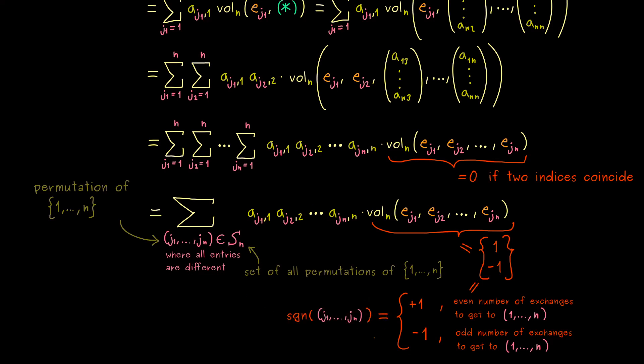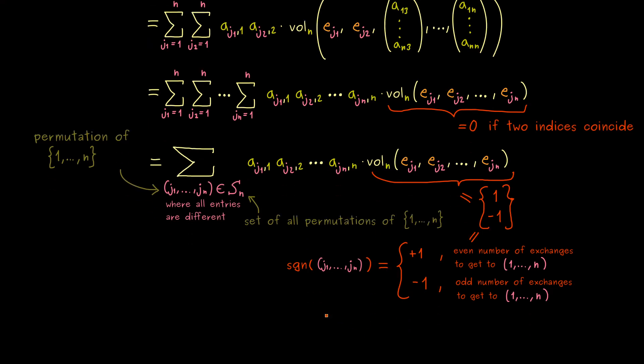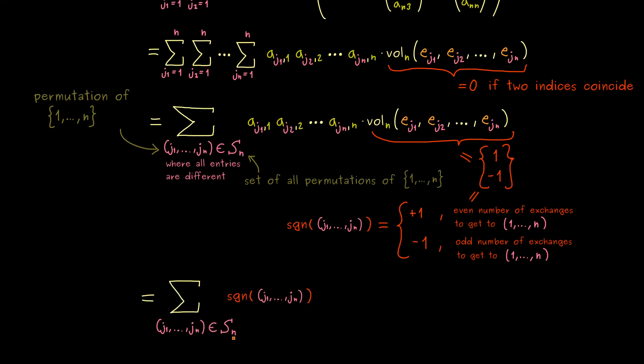Indeed, this number here is well-defined and very useful for this formula. Because now our whole formula is finished and very short. So we have the sum over all permutations, the sign of the permutation, and then just the product of the coefficients.